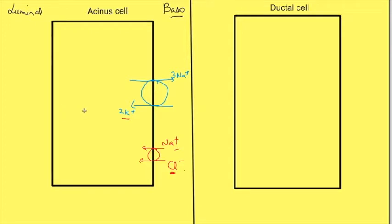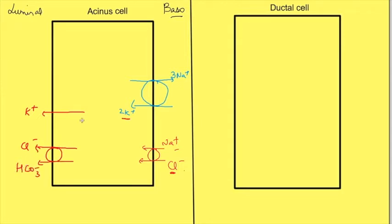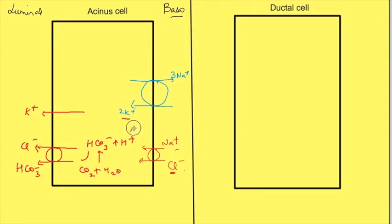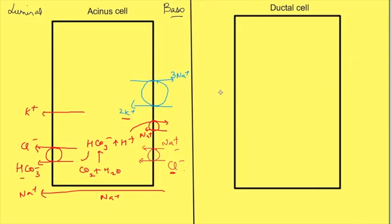Potassium and chloride move along their concentration gradients into the lumen — potassium via a potassium channel and chloride via its channel. Along with chloride, bicarbonate also moves from inside the cell to the lumen. Bicarbonate is generated when carbon dioxide inside the cell binds with water in the presence of carbonic anhydrase, producing bicarbonate and H+ ions. Bicarbonate moves into the lumen while H+ ions move to the basolateral side in exchange for sodium via the paracellular route. Thus, in the acinar cell, sodium, potassium, chloride, and bicarbonate all move into the lumen.